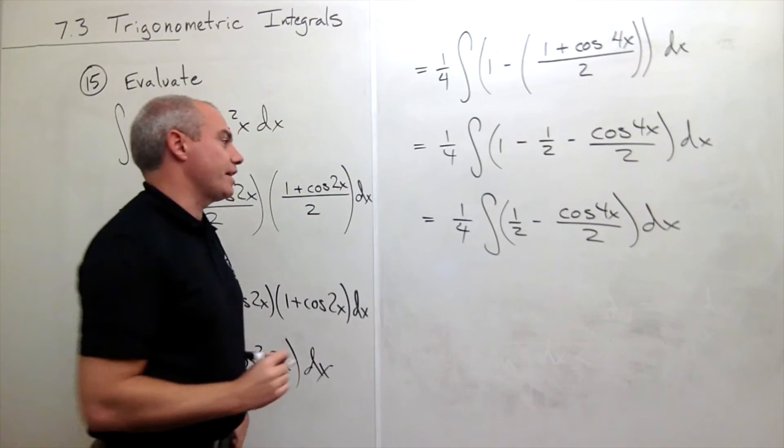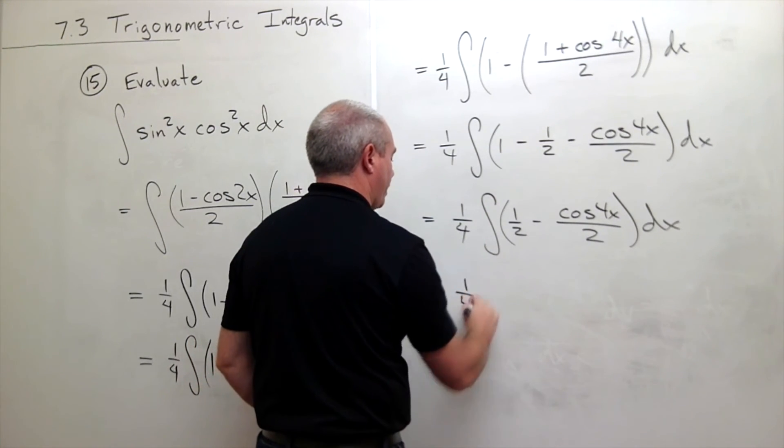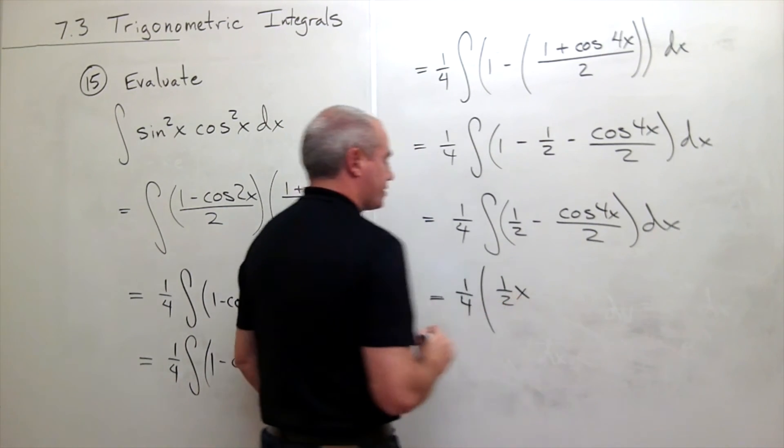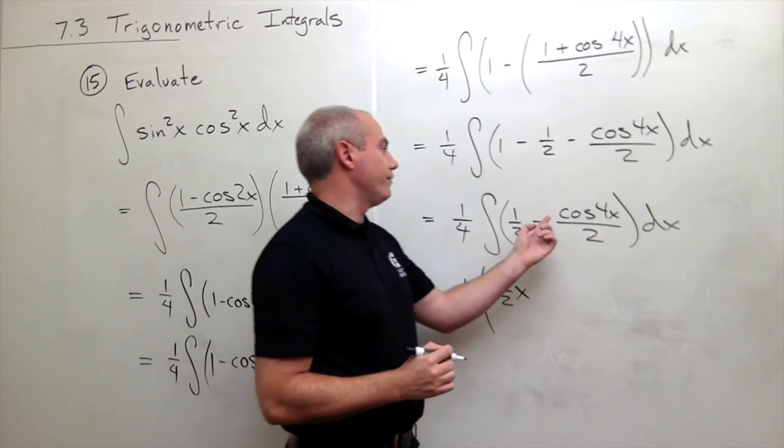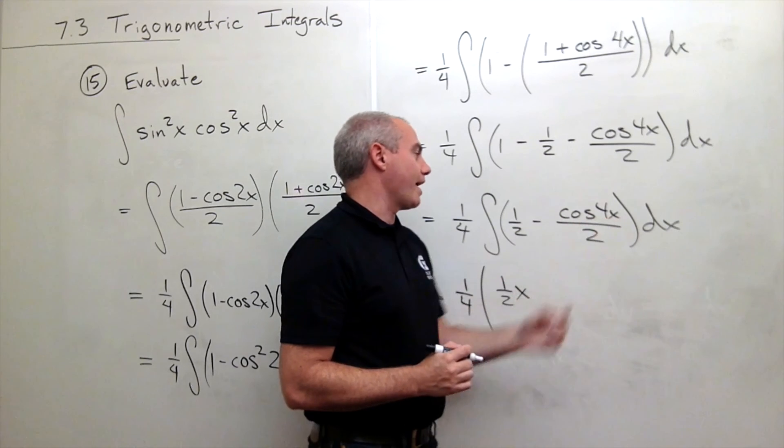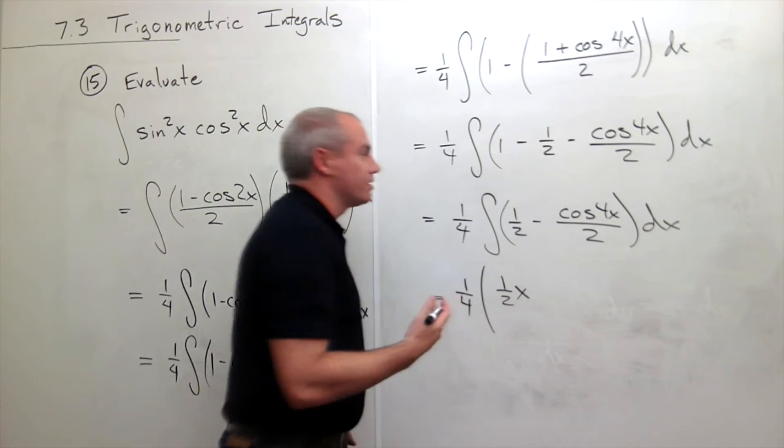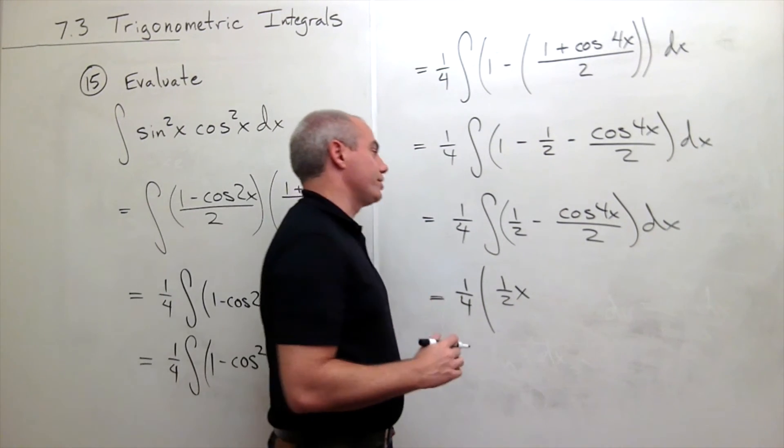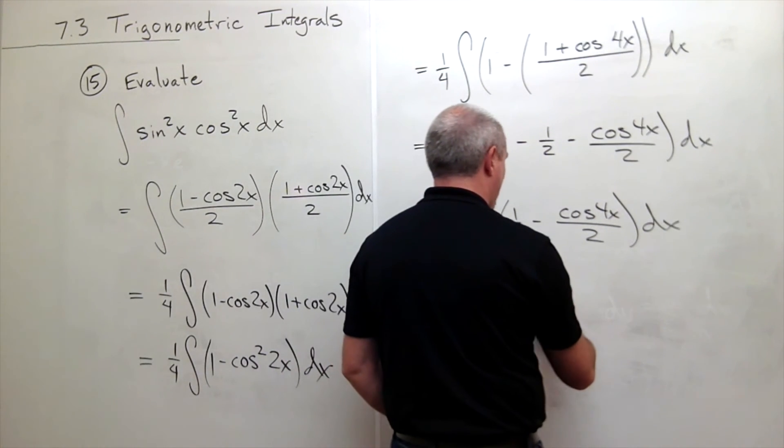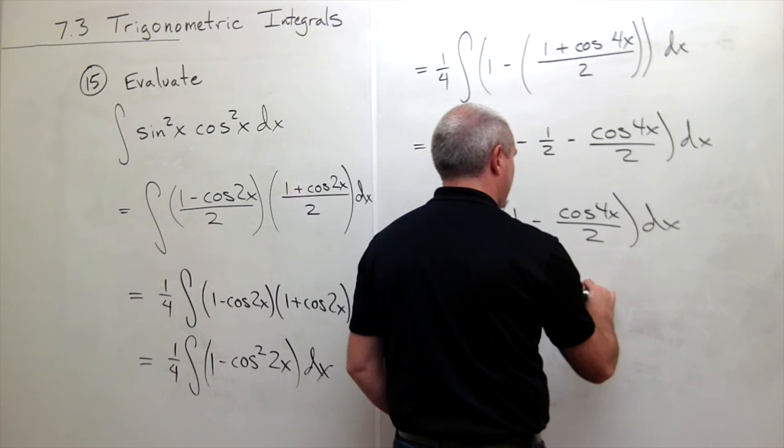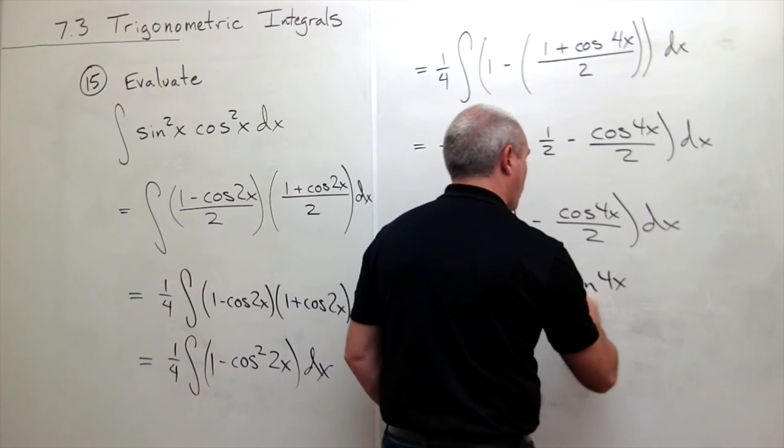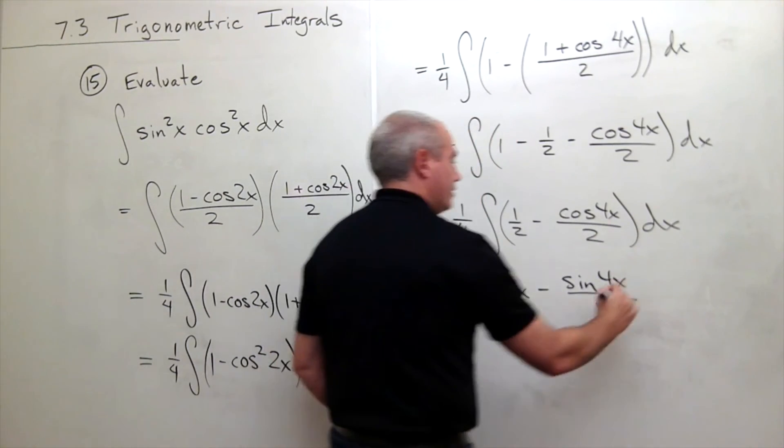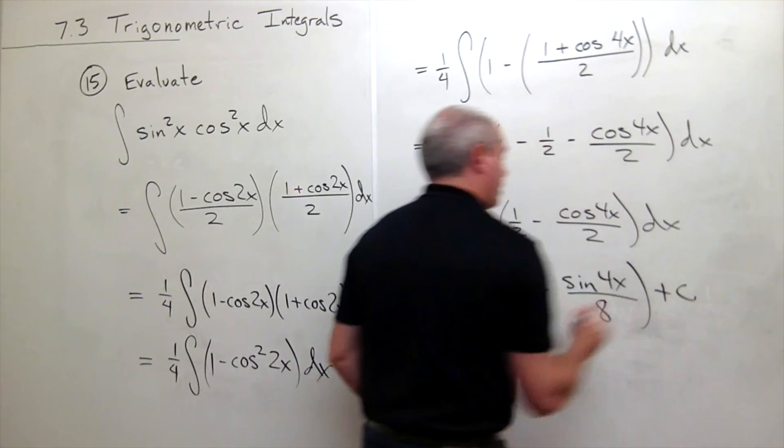Now I can just take the antiderivative. I still have the 1 fourth out front. The antiderivative of 1 half is 1 half x, and the antiderivative of cosine of 4x is sine of 4x, but then I need to divide by 4 to account for the chain rule. So I get minus sine of 4x over, when I divide by 4, multiply that by 2, I get an 8, and plus a constant.